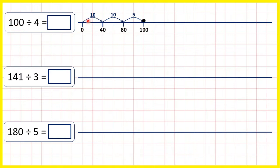Then we just count up what we jumped. We jumped 2 tens and 5. So altogether we jumped 25 steps. Therefore, 100 divided by 4 is 25.